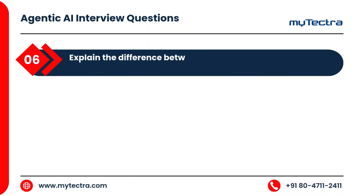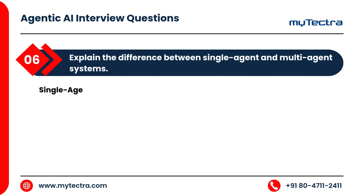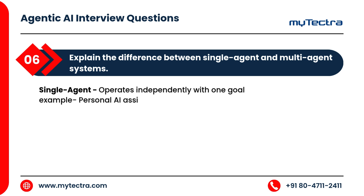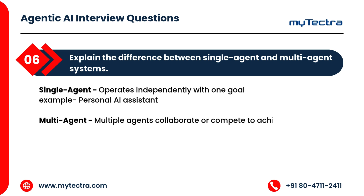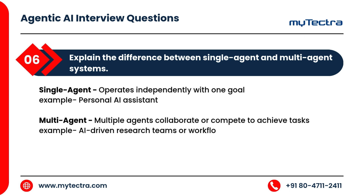Explain the difference between single-agent and multi-agent systems. A single agent operates independently with one goal — for example, a personal AI assistant. Multi-agent systems involve multiple agents that collaborate or compete to achieve tasks — for example, AI-driven research teams or workflow bots.